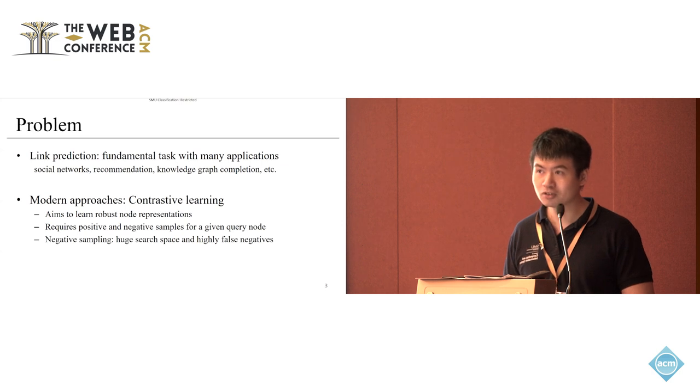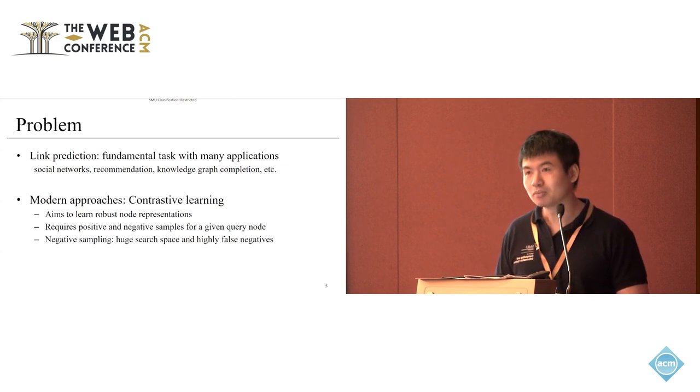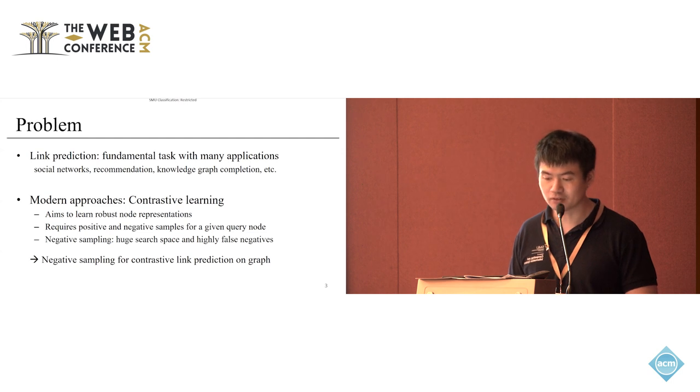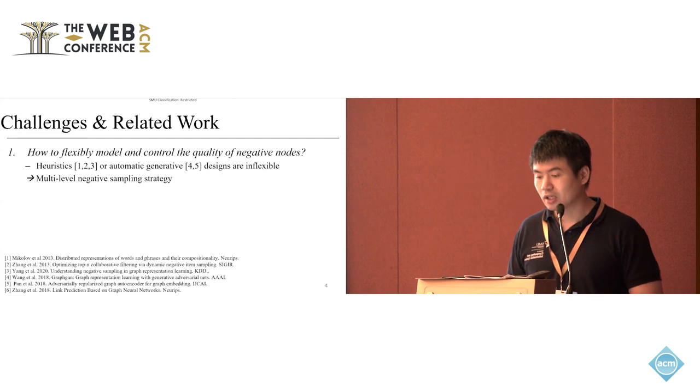It's easier to get a lot of false negatives because in a graph, the links are typically incomplete. Even though you do not observe a link between two nodes on the graph, they could actually be a positive pair. If you just do random sampling, you may get false negatives. That's why we decided to study negative sampling for this link prediction task on graphs.